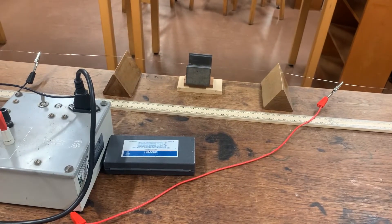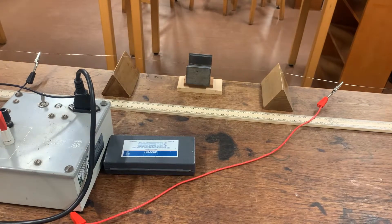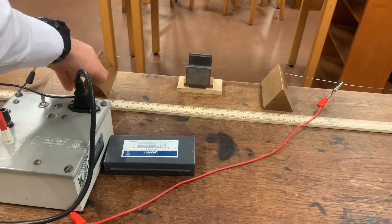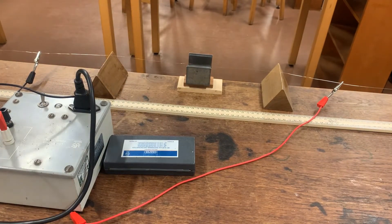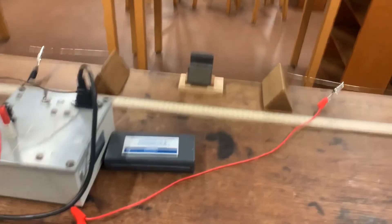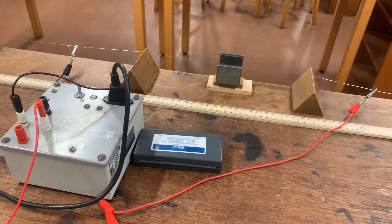I've also got two wooden prisms which are going to allow the wire to rest and what I can do is change the length of wire that I have sitting in that field. You'll notice I've also got two crocodile clips connected to the wire so I can pass a current through it.